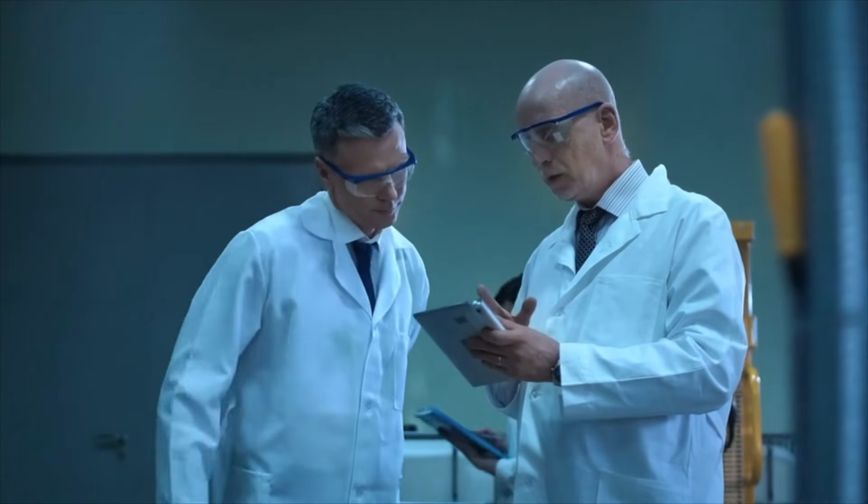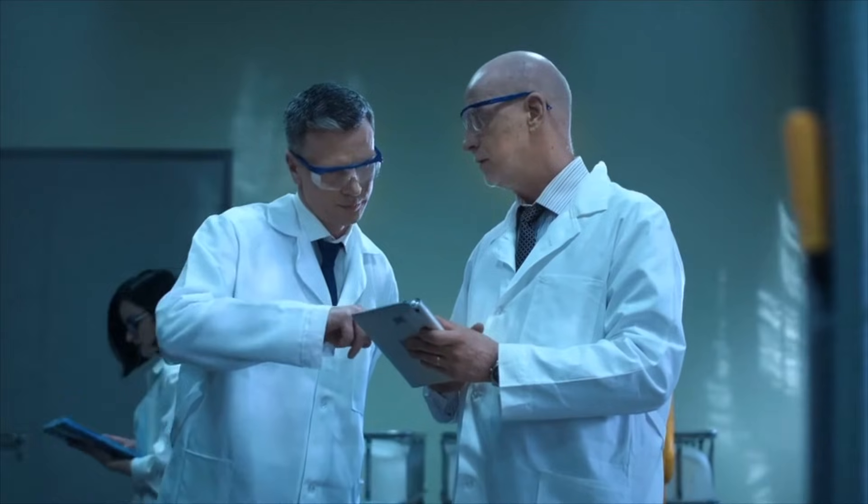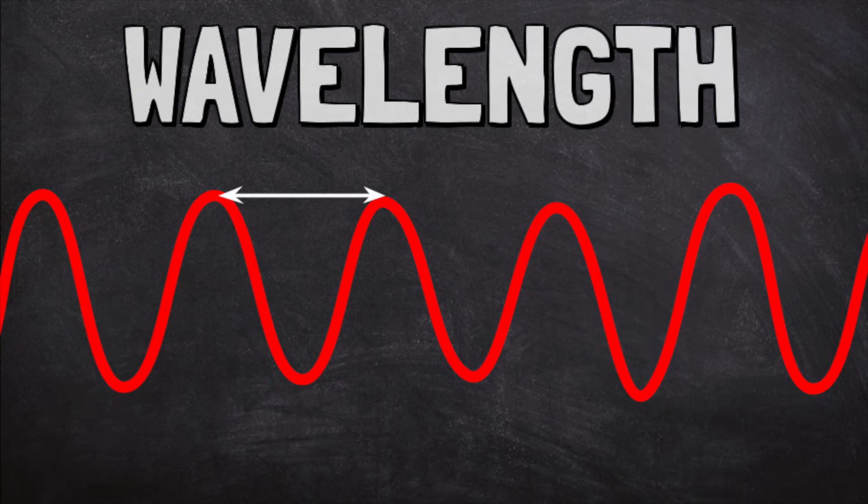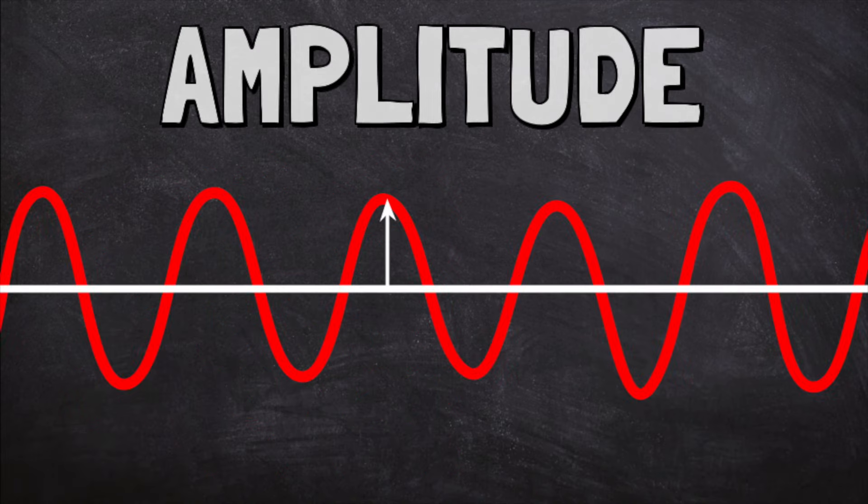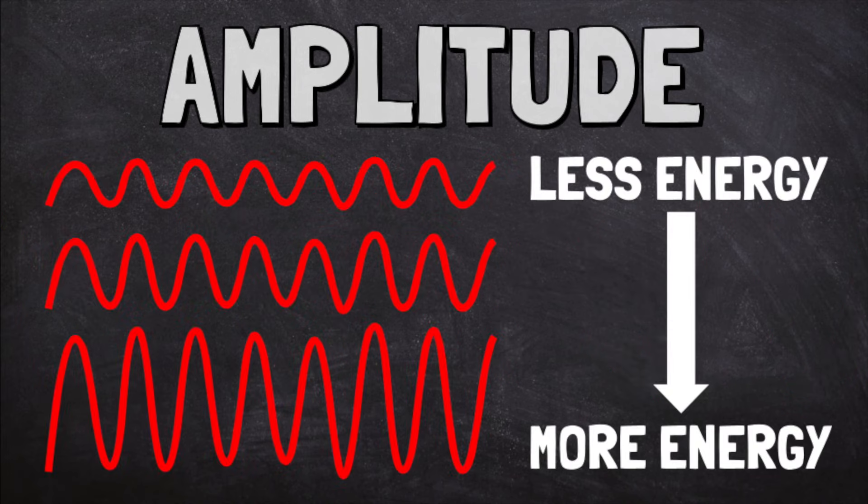Scientists can measure how much energy a wave has. Wavelength is the distance between the peaks or highest points of the waves. The closer together the peaks are, the shorter the wavelength and the more energy the wave has. Amplitude measures how tall or short a wave is from its peak to its resting point. A taller wave with a higher amplitude means more energy.